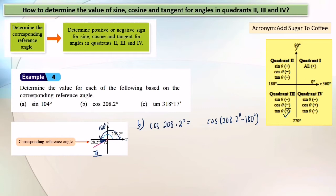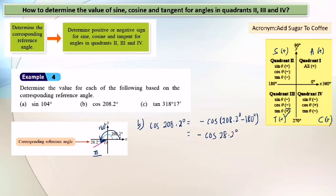To memorize the signs, we use the acronym 'add sugar to coffee': first quadrant — all positive; second quadrant — only sine positive; third quadrant — only tangent positive; fourth quadrant — only cosine positive. So in the third quadrant, cosine is negative. We obtain negative cos 28.2 degrees. Key in cos 28.2 into your calculator and you get 0.8813, so the answer is negative 0.8813.